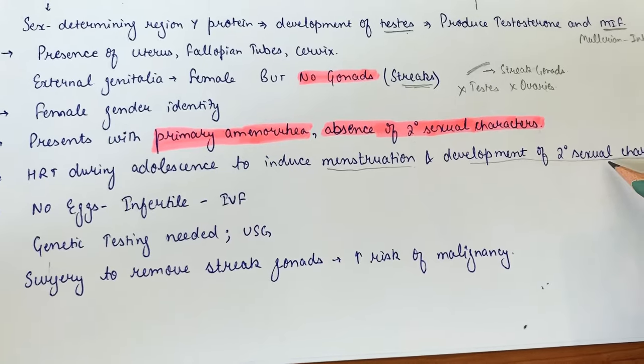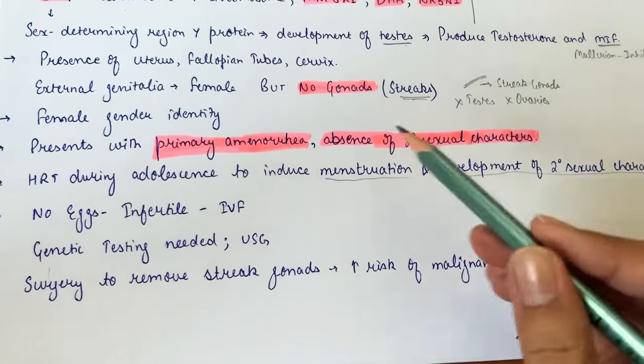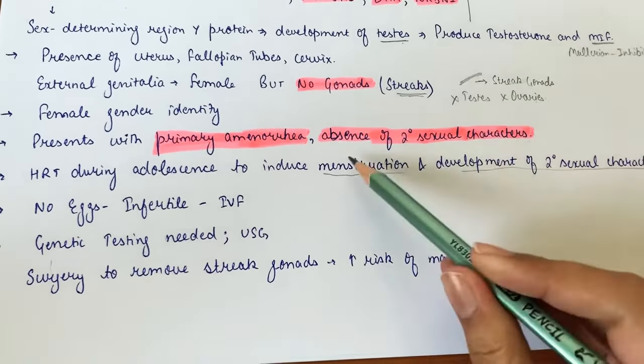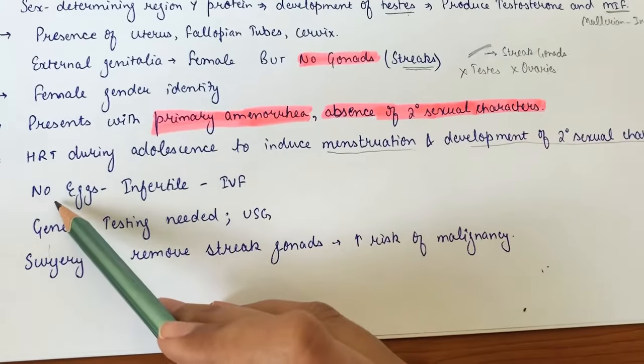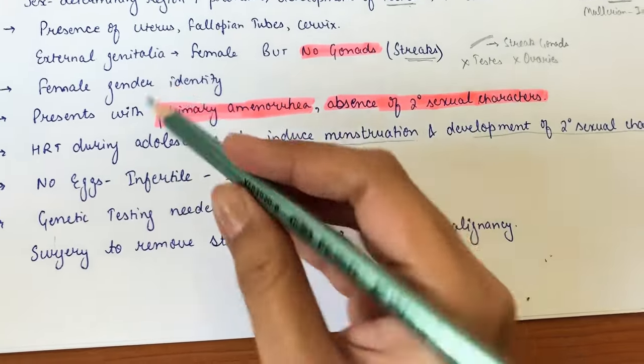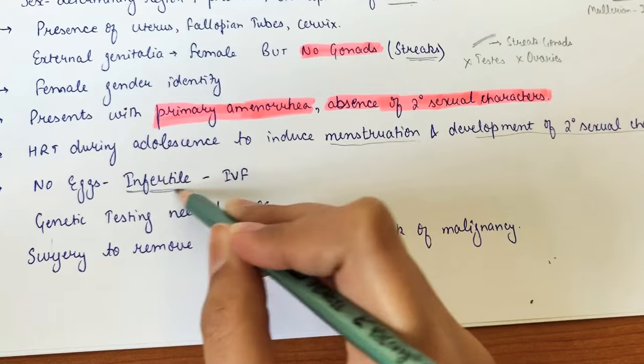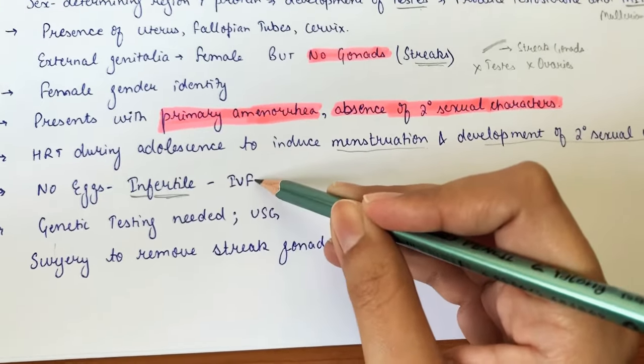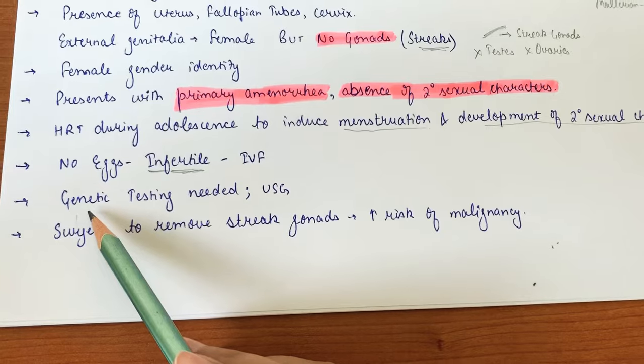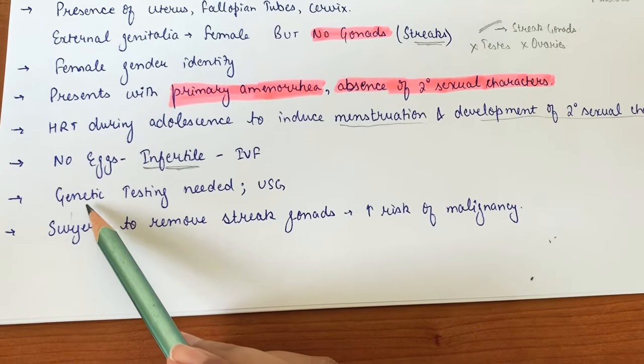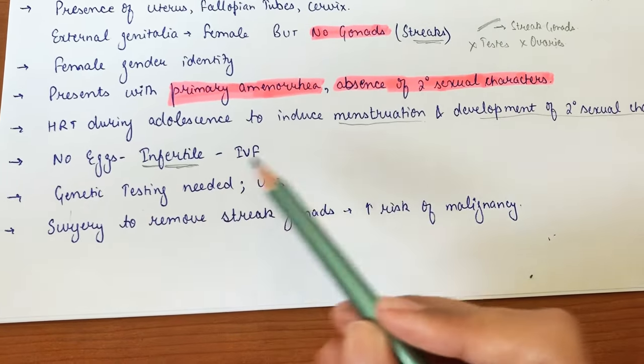These females are infertile because there are no eggs. However, in vitro fertilization can be attempted since the uterus is present. For diagnosis, clinical examination is often sufficient, but karyotyping and genetic testing are also needed. Ultrasonography helps exclude tumors and diagnose streak gonads.